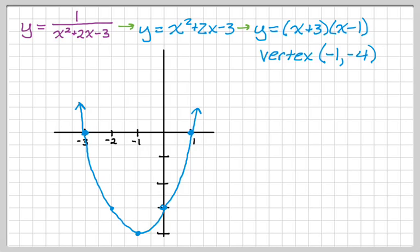First things first, the zeros become vertical asymptotes, so I'll dot those in. I have three more points whose reciprocals I need to take. Negative 1, negative 4 becomes negative 1, negative 1 fourth. And 0, negative 3 becomes 0, negative 1 third — taking reciprocals of the y coordinates. And negative 2, negative 3 becomes negative 2, negative 1 third.